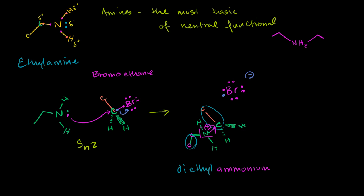If you view this as a salt - an ionically bonded pair of molecules - one molecule is diethylammonium and the other is the bromide anion. You always list the cation first, so this is diethylammonium bromide, which we were able to form through the SN2 reaction between ethylamine and bromoethane.